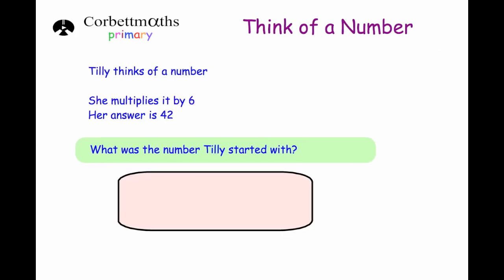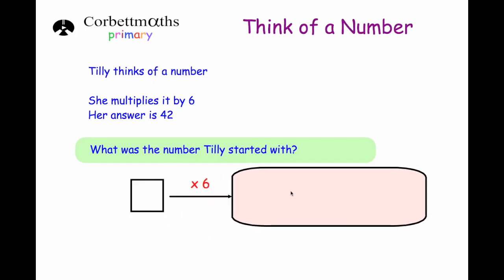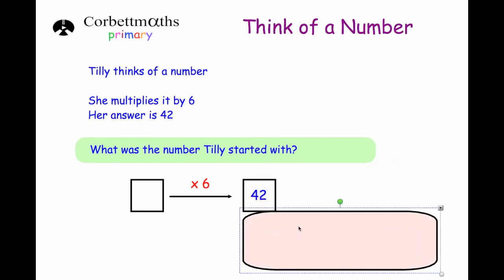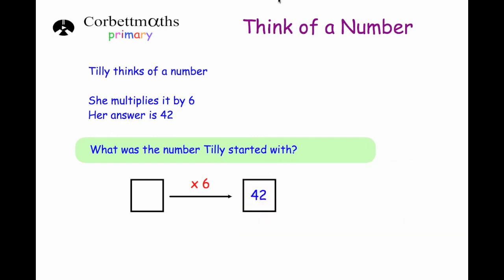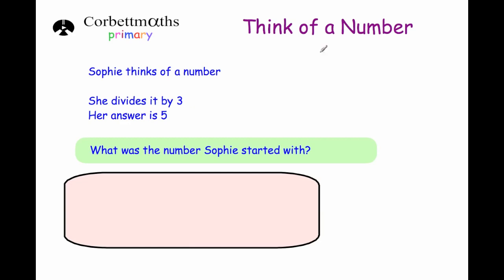The next question: Tilly thinks of a number, she multiplies it by six and her answer is 42 — what number did she start with? The inverse of multiplying by six is dividing by six. So we do 42 divided by six, which is seven. Tilly started with seven. Let's test it: seven times six is 42.